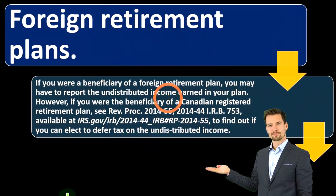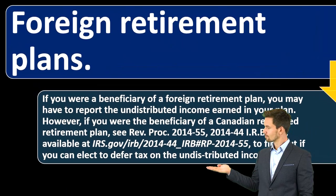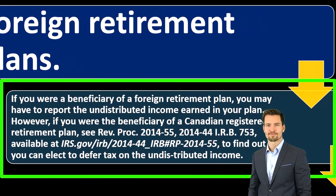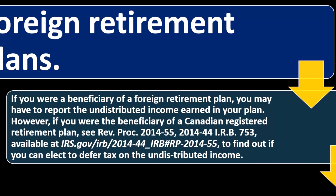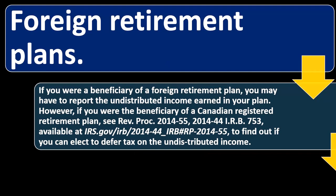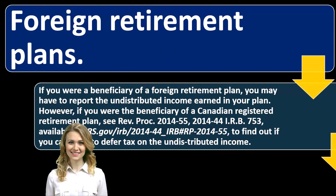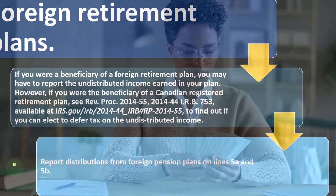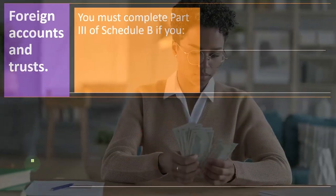Foreign retirement plans: if you are a beneficiary of a foreign retirement plan, you may have to report the undistributed income earned in your plan. However, if you were the beneficiary of a Canadian registered retirement plan, see Revenue Procedure 2014-55 (2014-44 IRB 753), available at IRS.gov, to find out if you can elect to defer tax on the undistributed income. Report distributions from foreign pension plans on lines 5a and 5b.